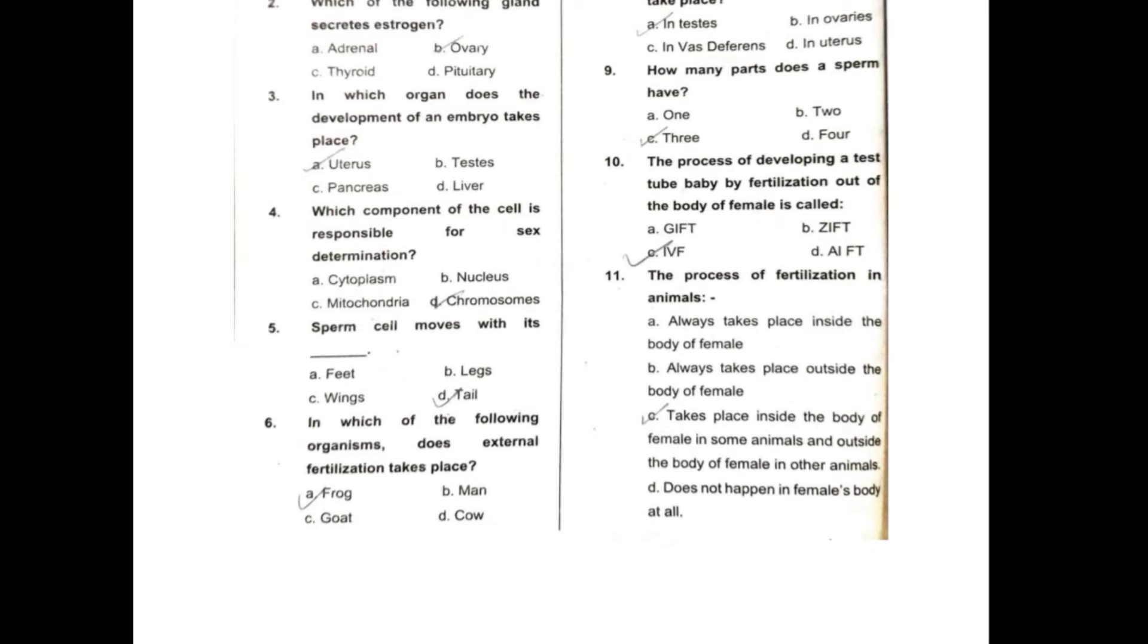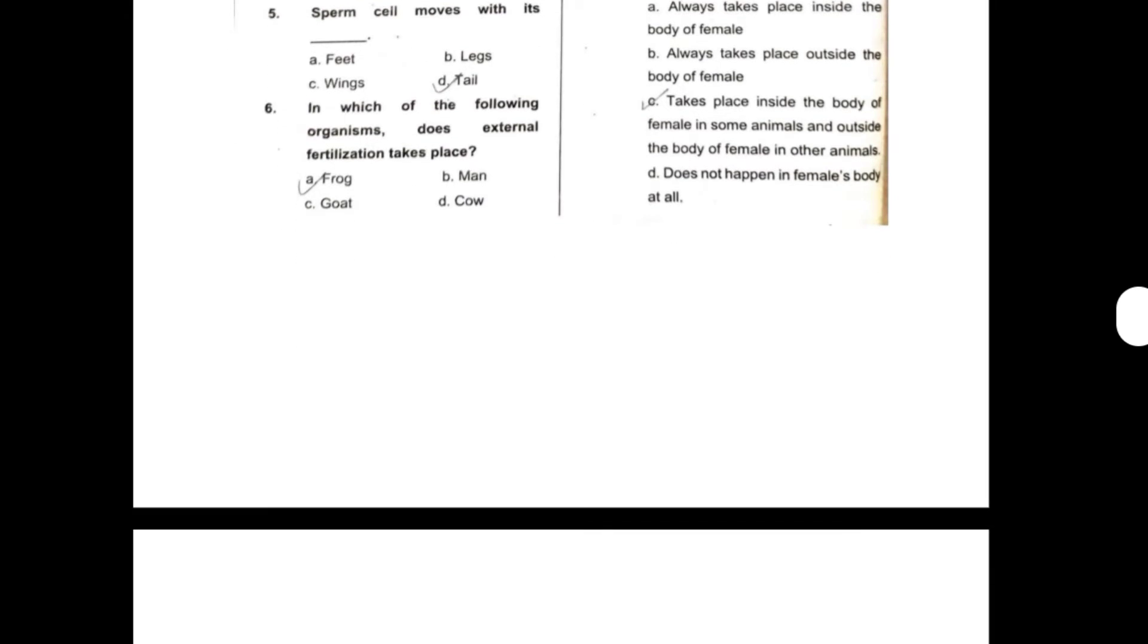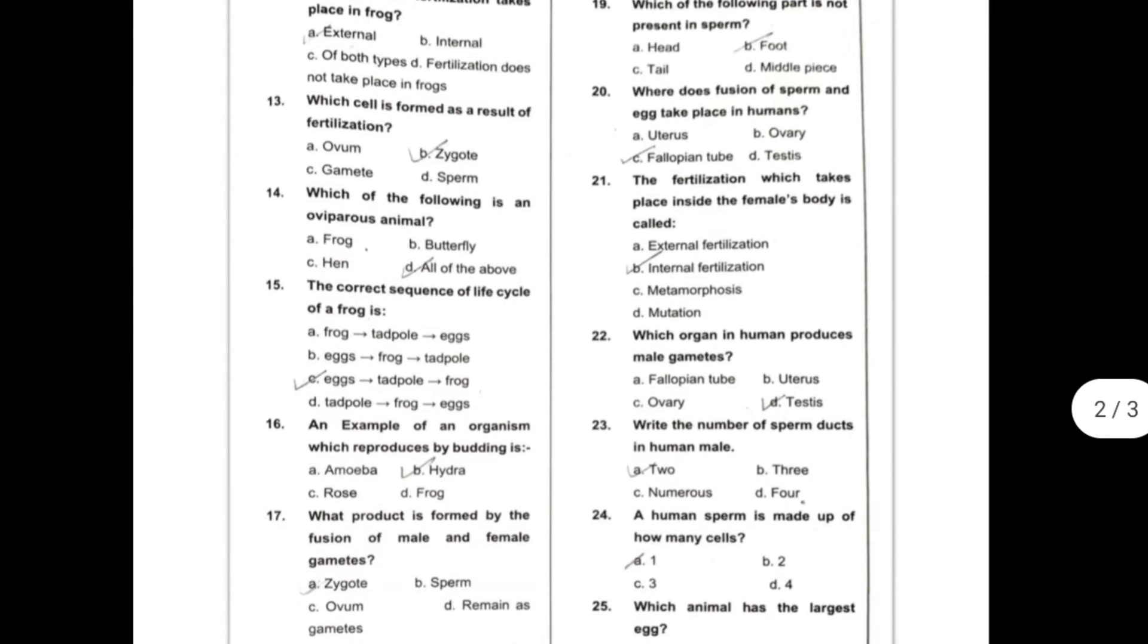Tenth, the process of developing a test tube baby by fertilization out of the body of female is called? So this can be IVF. Eleventh question: The process of fertilization in animals. So this can be takes place inside the body of females in some animals and outside the body of females in other animals. Twelfth, which type of fertilization takes place in frog? So this can be external.